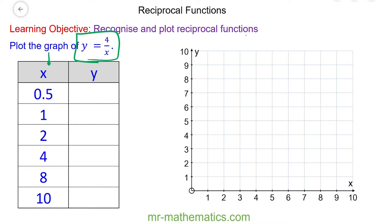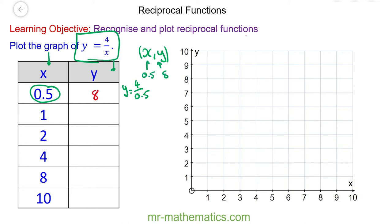Here are your values of x, and as the value of x changes so will the value of y. We begin with x equals 0.5, so y is equal to 4 divided by 0.5, and that is 8. The coordinate pair is made up of an x and a y value, and we now know that x is 0.5 when y is 8, so we can plot this point.